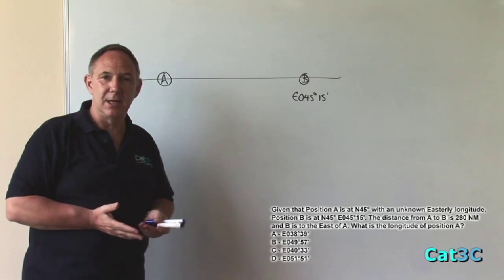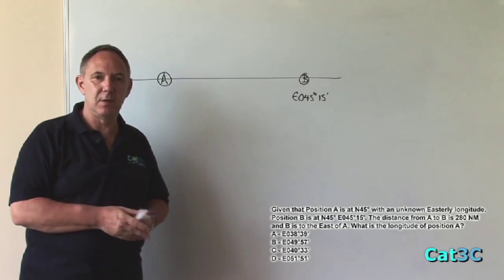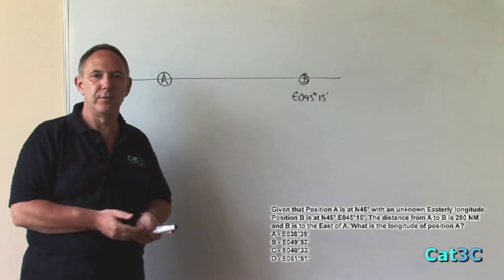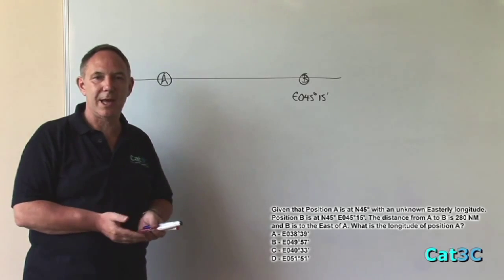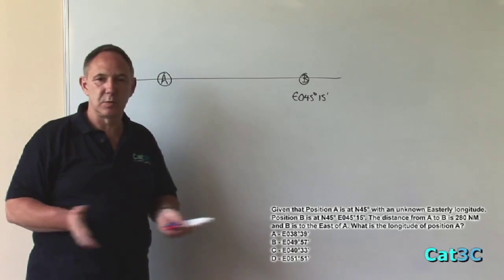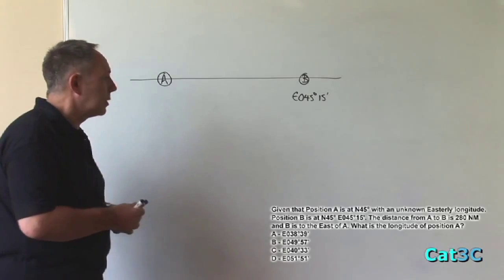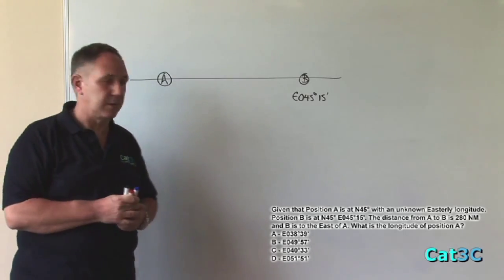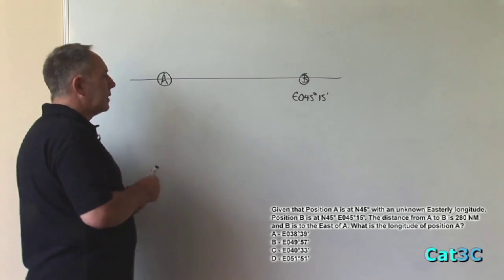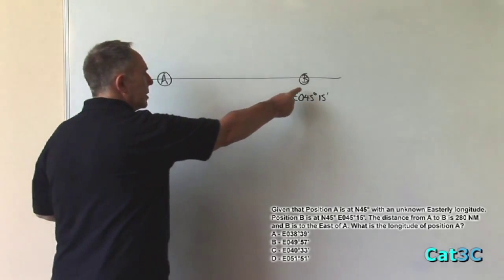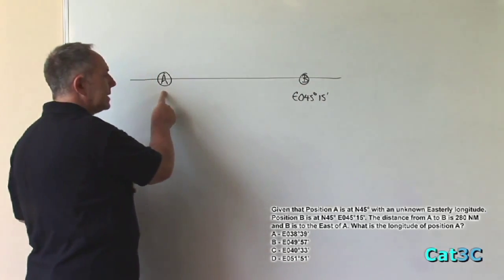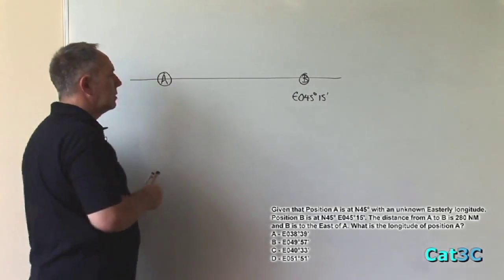Just as a bit of exam technique, if you look at the optional answers, you can see that two of the answers are more than 45 degrees and two are less. It can't be the answers which are greater than 45 degrees. It must be one of the two which are less than 45 degrees. What we have to do is to find the change of longitude between B and A to work out the longitude at A.